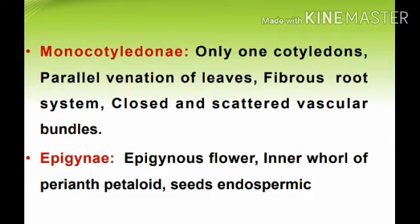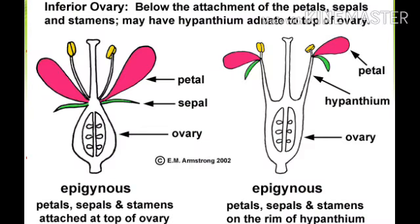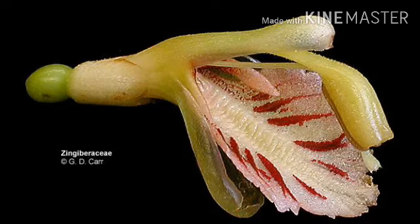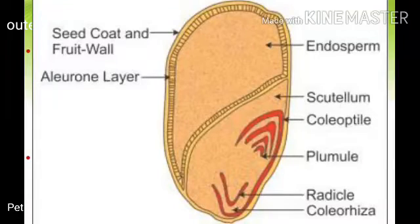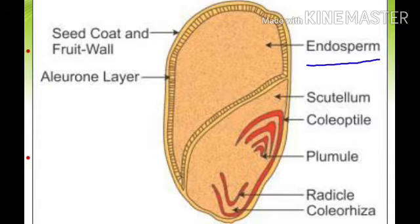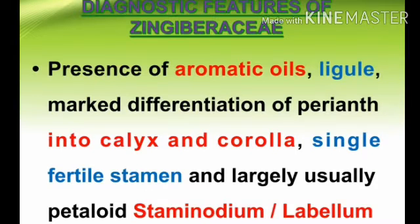The series Epigynae indicates that the flowers are epigynous, meaning the ovary is inferior in position. It consists of two whorls of perianth — the inner whorl of the perianth is petaloid — and the seeds are endospermic. Endospermic means the seeds contain endosperm, which is a nutritive tissue. There are common particular characters found in each family, called the diagnostic features or diagnostic characters.